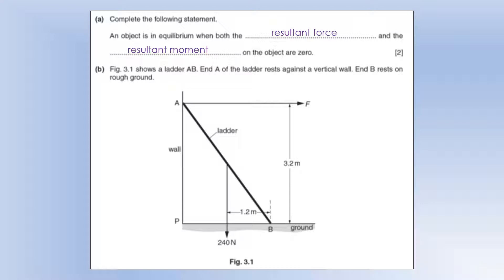We've got a ladder. The end A is at rest against the vertical wall, and we can see there's a normal force from the wall, F pushing outwards. And we've also got it at rest on the ground, and there would be a normal force upwards from the ground. There might even be some friction involved here as well.